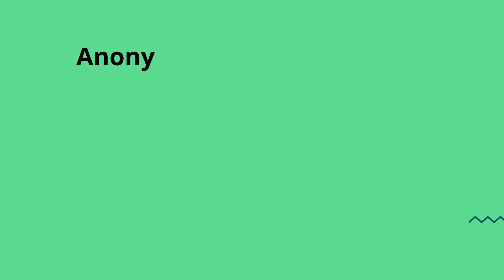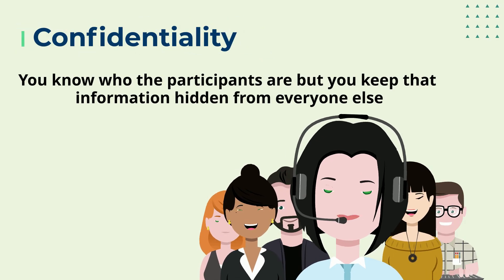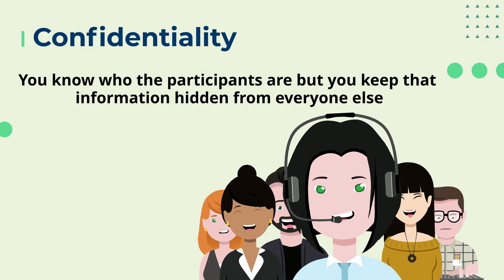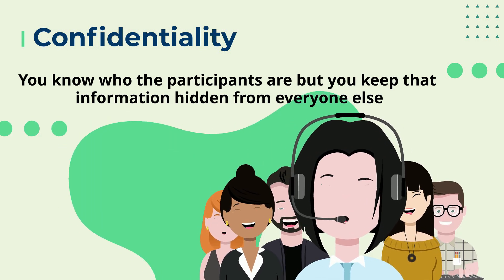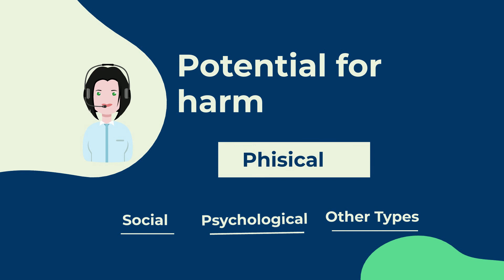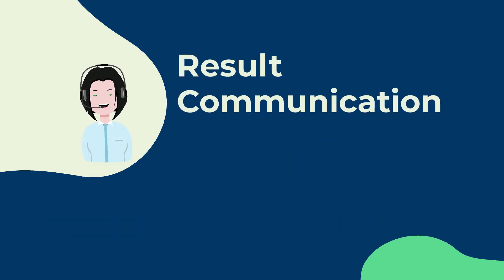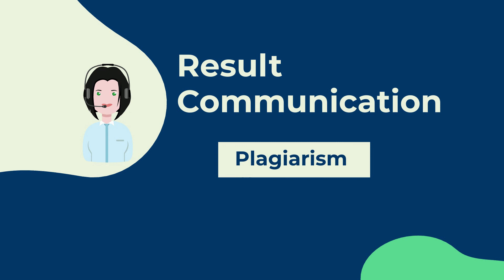Anonymity means you don't know the identities of the participants, and personally identifiable data is not collected. Confidentiality means you know who the participants are, but you keep that information hidden from everyone else, and you anonymize personally identifiable data so that it can't be linked to other data by anyone else. Potential for harm: physical, social, psychological, and all other types of harm are kept to an absolute minimum. Results communication: you ensure your work is free of plagiarism or research misconduct, and you accurately represent your results.